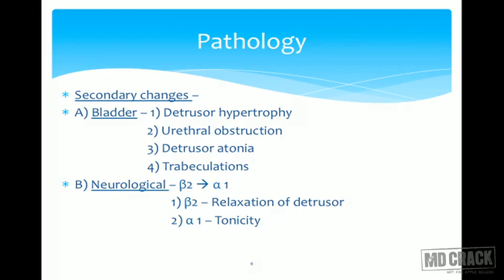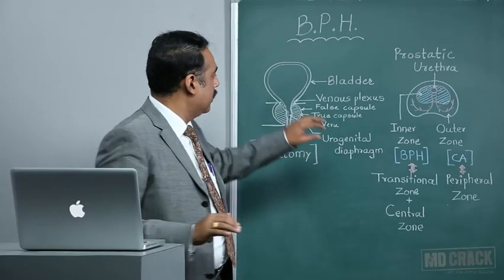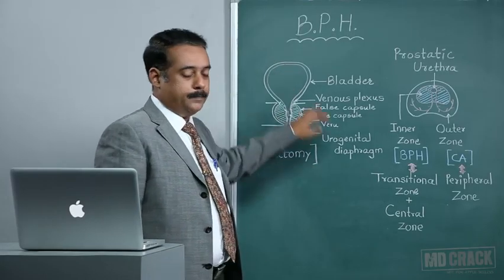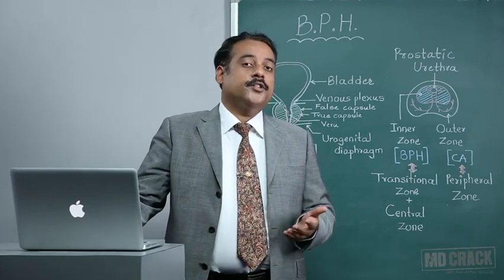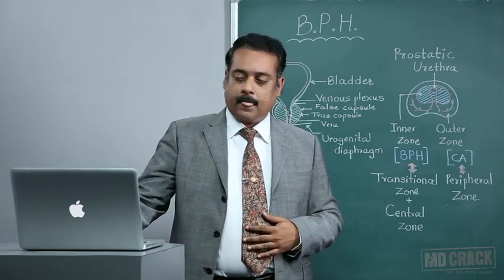Now we will go on to the secondary changes associated with BPH. The changes occur in the gland as well as in the structure adjacent to the gland, that is the urinary bladder. In the bladder, there can be detrusor hypertrophy, urethral obstruction, detrusor atonia, and trabeculations. There are also few neurological changes seen with this pathology.